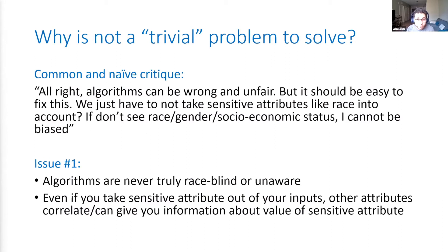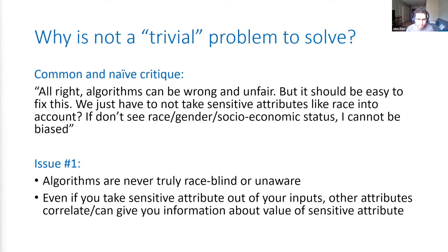I hope this convinced you that it's not just because you're using an algorithm that decisions are going to be fair. Even if unfairness can come from an algorithm, another critique would be: sure, my algorithm can be wrong and unfair, but it should be really easy to fix — because the only thing I have to do is not take any sensitive attribute like race, gender, or socioeconomic status into account. If I'm race-blind, I can't discriminate.